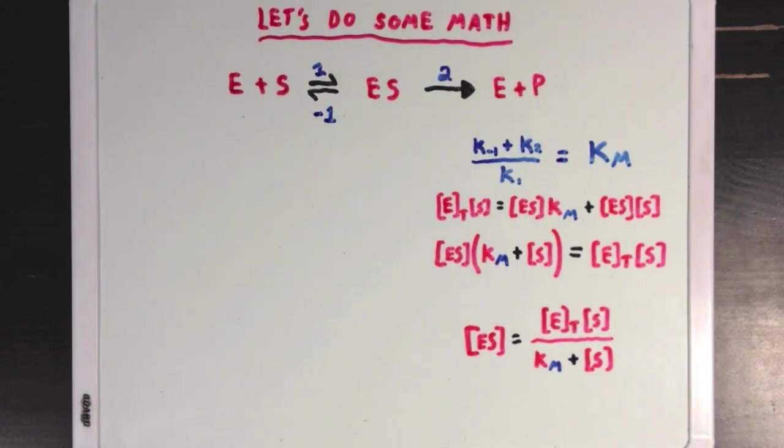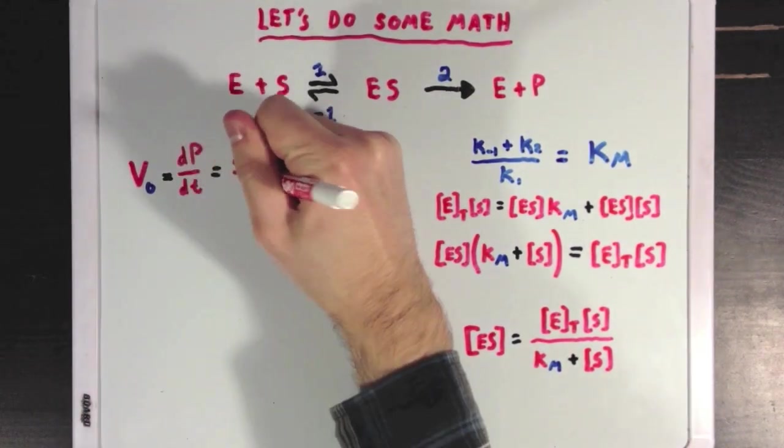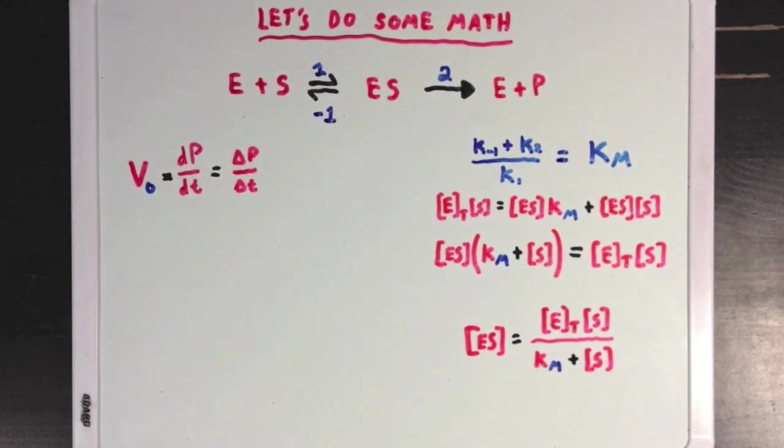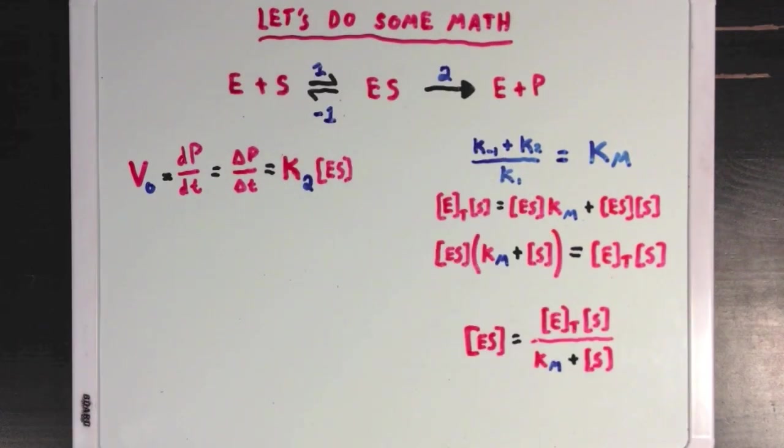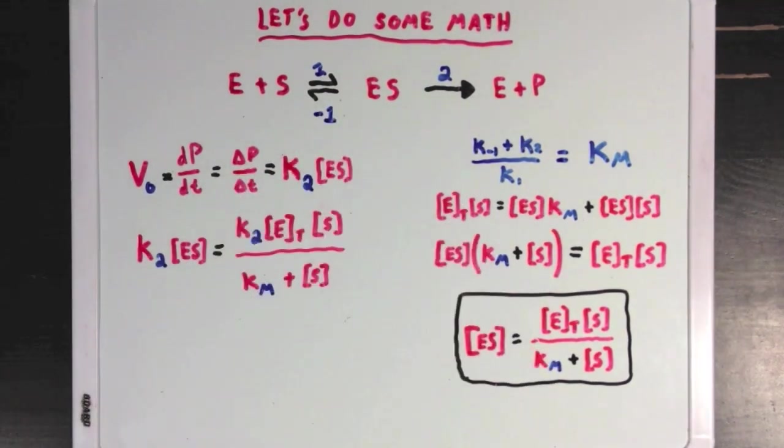And now what I'm going to do is remind you that the speed of our whole process, which I'll call VO, is equal to the rate of formation of our product, which we called rate 2 before, which is also equal to K2 times ES. So now using our equation over here, I'm going to multiply both sides of the equation by K2.